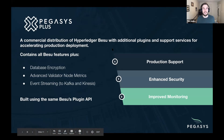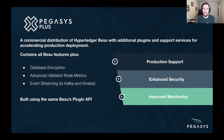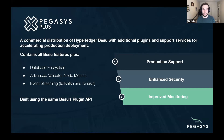PegaSys+ is basically a distribution of Hyperledger Besu that we've built where we bundle some additional plugins that interact through the plugin API to solve problems that enterprises have when deploying this technology. The three main plugins today are database encryption that we've already mentioned, advanced validator node monitoring so that if you're running an IBFT network you can get much more granular data about validator node health, and finally the ability to use Kafka and Kinesis for event streaming. Any data exposed by the plugin API can be streamed directly to Kafka or Kinesis to interact with the rest of your application.